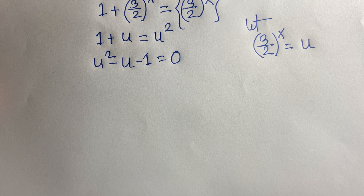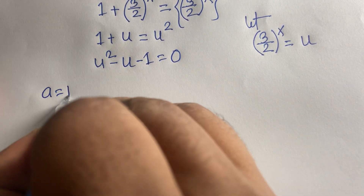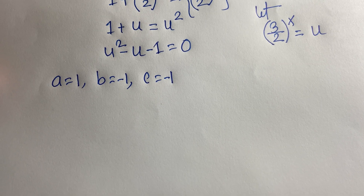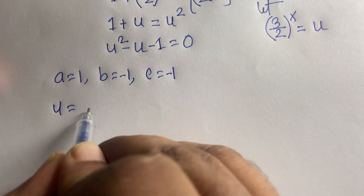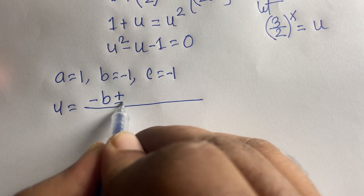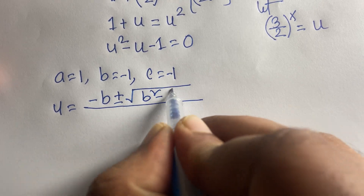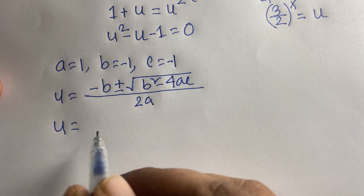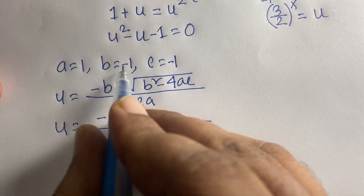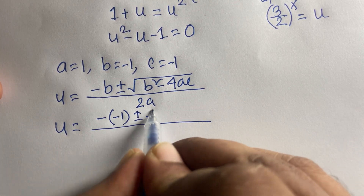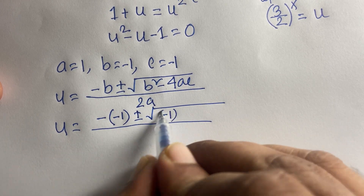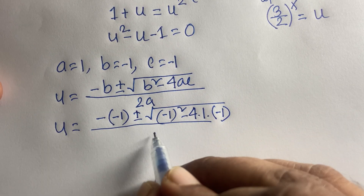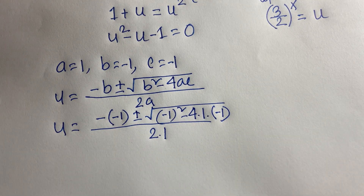Here a equals 1, b equals minus 1, and c equals minus 1. Using the quadratic formula, u equals minus b plus or minus the square root of (b squared minus 4ac) over 2a. Substituting: u equals minus(minus 1) plus or minus the square root of (minus 1)^2 minus 4 times 1 times (minus 1), all over 2 times 1.